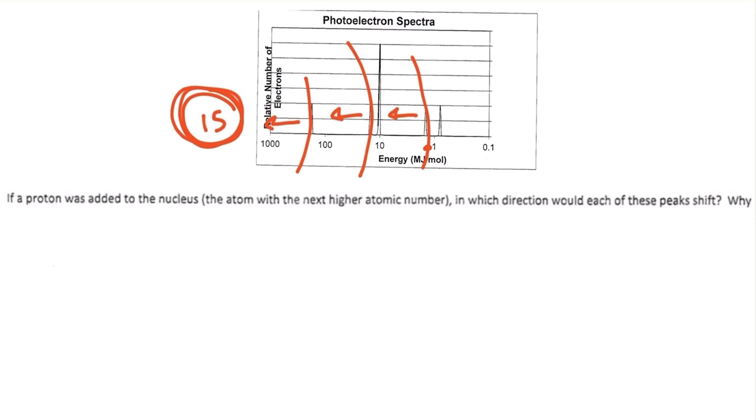Therefore, to answer this question, in which direction would all these peaks move? To the left, because they would have greater energy, so it would be closer to a thousand.